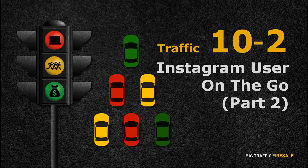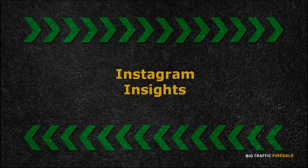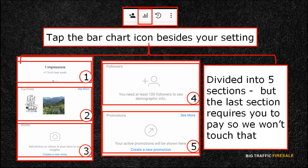This is part two of becoming an Instagram user on the go. Your next step is navigating and learning Instagram Insights. Go to your profile page and tap the bar chart icon beside your settings icon. It will appear blank if you do not have any posts yet.